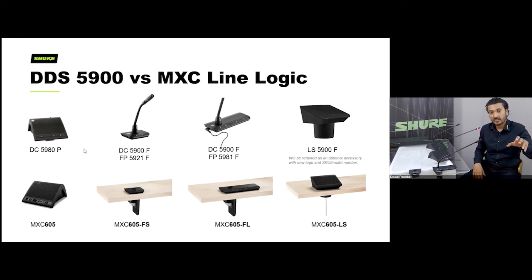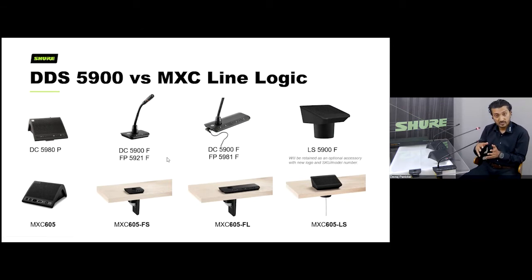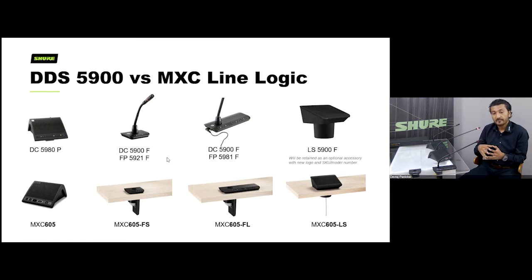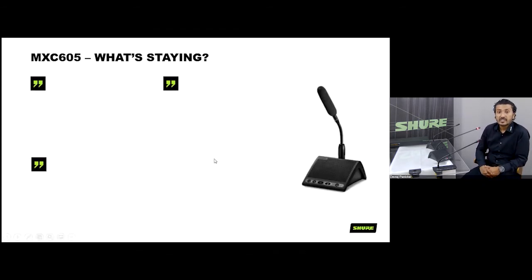The MXC605 flush mount units exactly match the form factor of the DDS flush mount equivalents. If you are an existing DDS flush mount user and want to upgrade to the 605, you don't need to change your existing setup — the old unit comes out and the new unit fits exactly into the same 53mm hole that was cut for the DC series. So hardware-wise, it is not a major forklift upgrade when moving to the newer system.